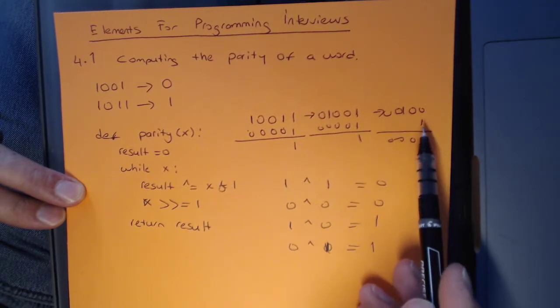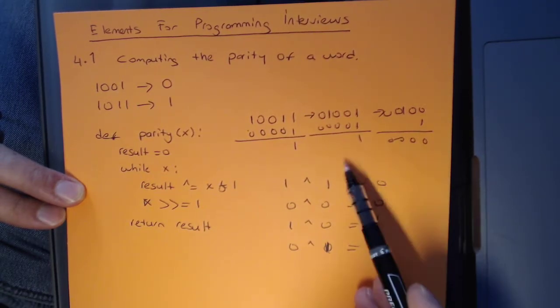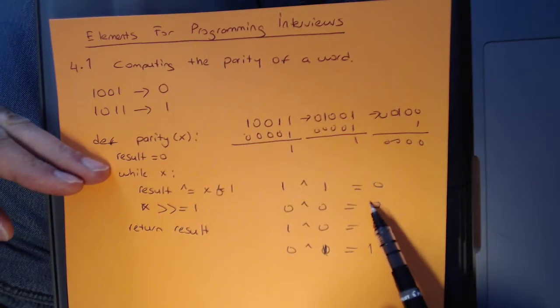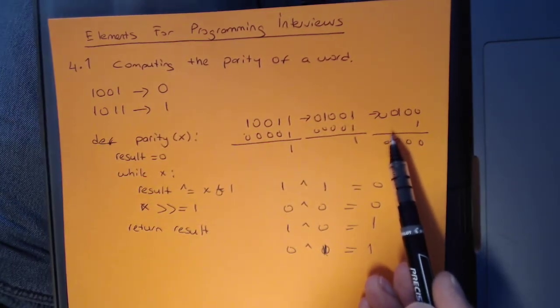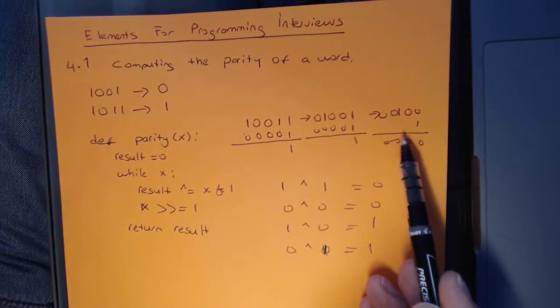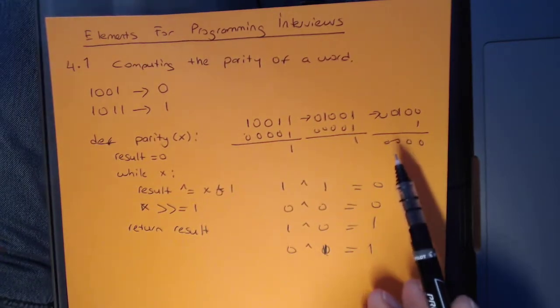The next time you get a 0, and your result was 0 already, 0, 0 is 0. But when you get to this particular bit, your result was 0 and you get a 1, then you will get a result of 1.